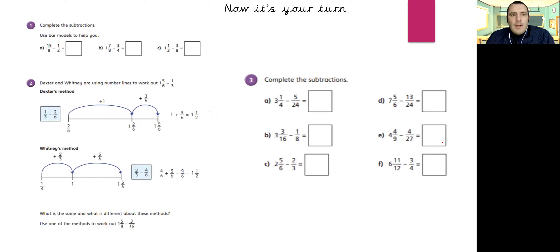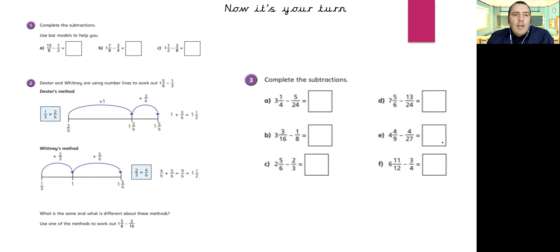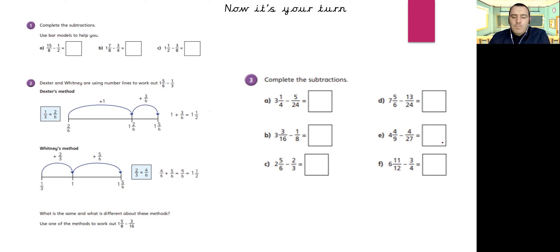Now it's your turn. Take your time and follow the instructions. Question one asks you to use bar models — have a go with them. If they don't work for you, don't worry. Have a look at Dexter and Whitney's methods for one and five sixths take away a third. Which way works best for you? Then there's some practice in question three working through some subtractions. Pause the video here.